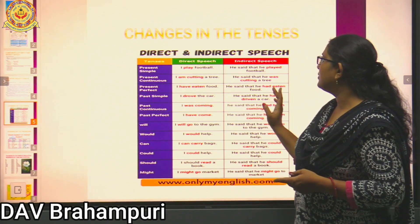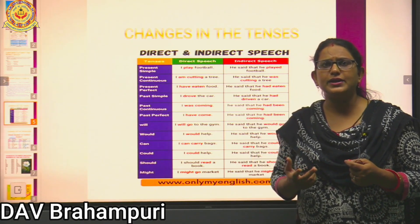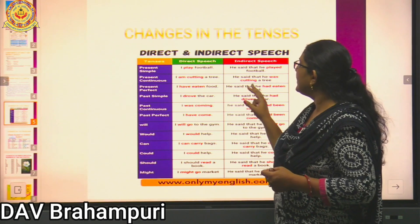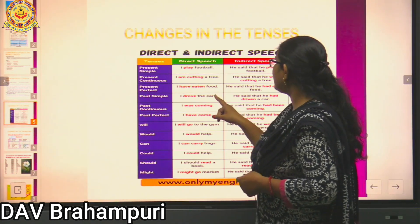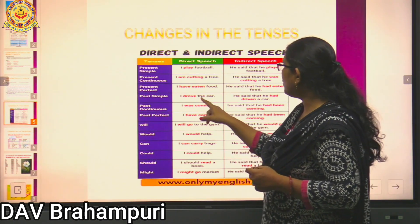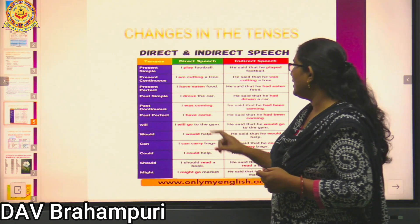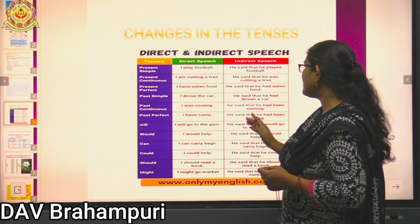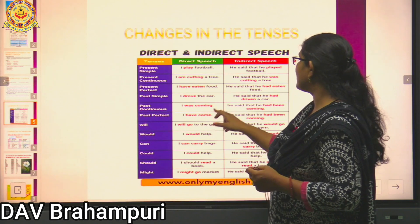Present perfect tense changes to past perfect: 'I have eaten food' becomes 'he said that he had eaten food.' The past perfect formula is: subject + had + third form of verb + object. Simple past also changes to past perfect: 'I drove the car' becomes 'he said that he had driven the car.' Past continuous changes to past perfect continuous: 'I was coming' becomes 'he said that he had been coming.' Present perfect changes to past perfect.